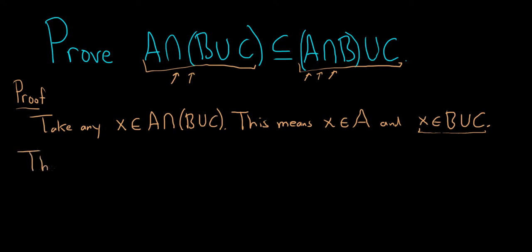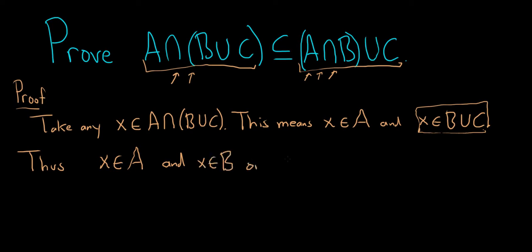Thus, we have x in A, and if x is in B union C, that means that x is in B or x is in C. So x is in B or x is in C.